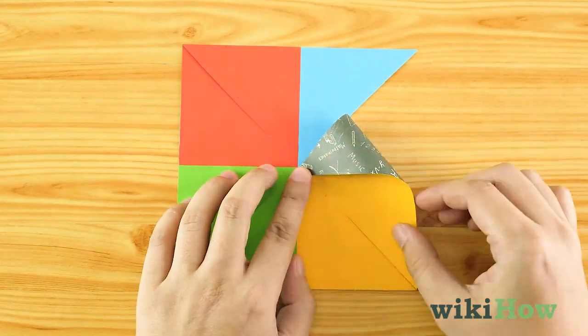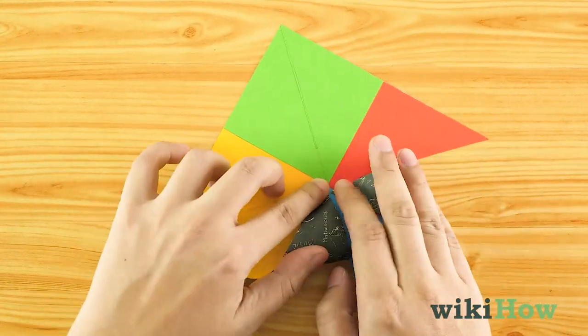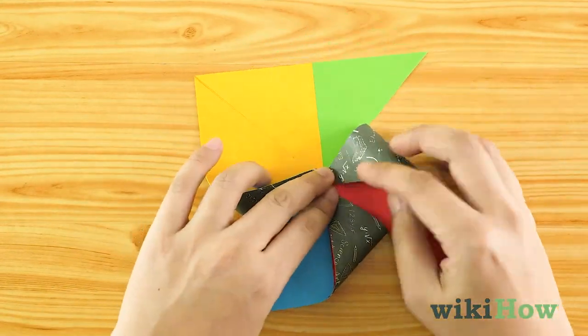Bring every other corner to the center of the square paper. Make sure the curved ends of the corners overlap.